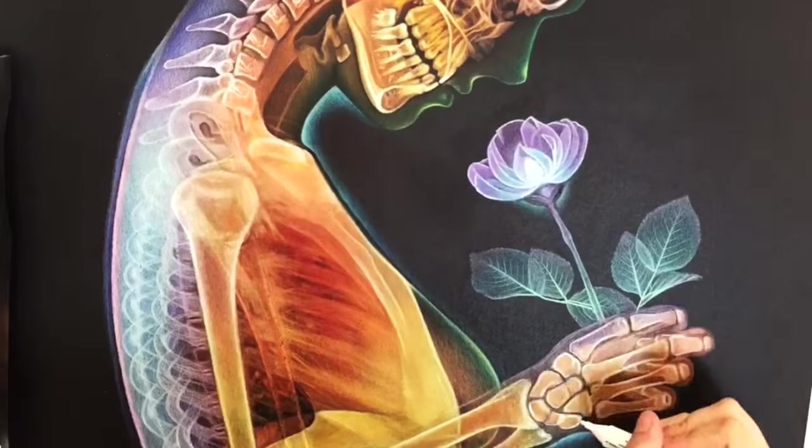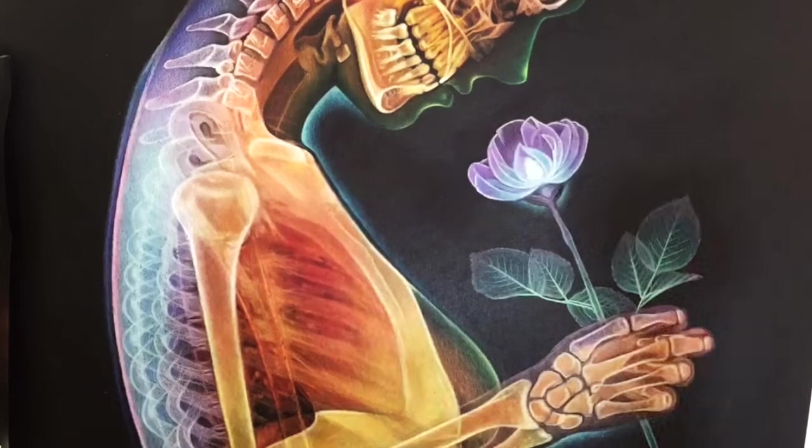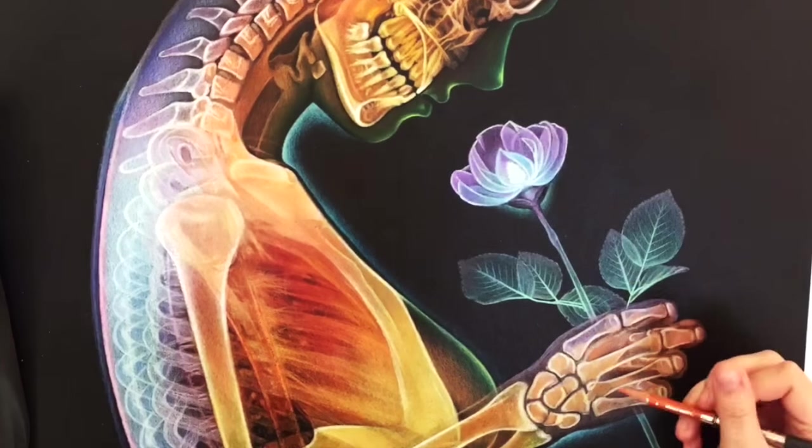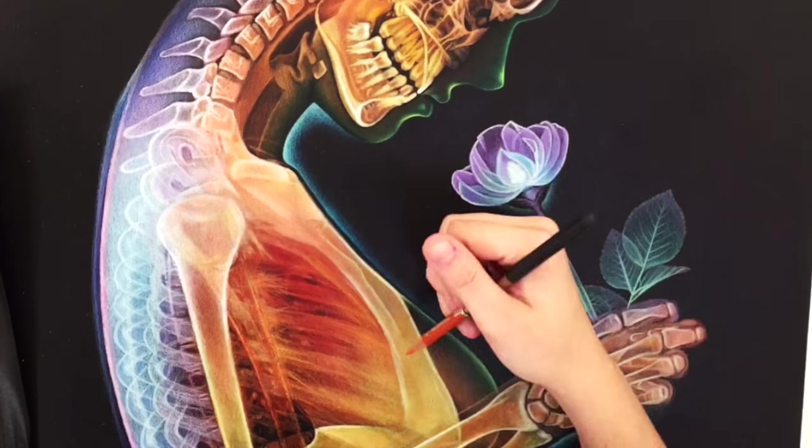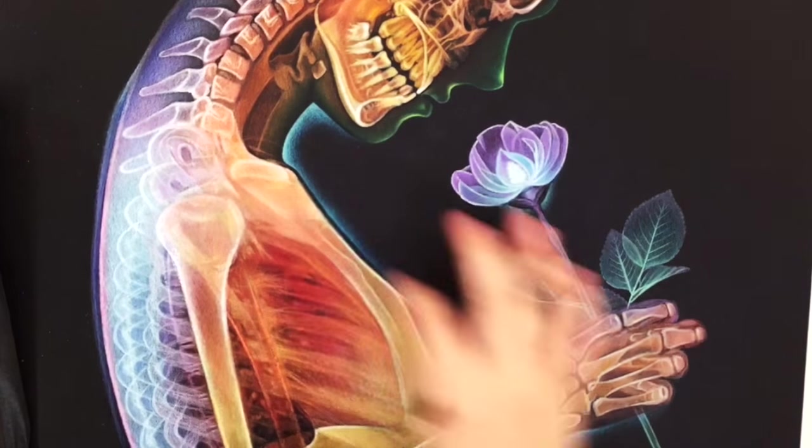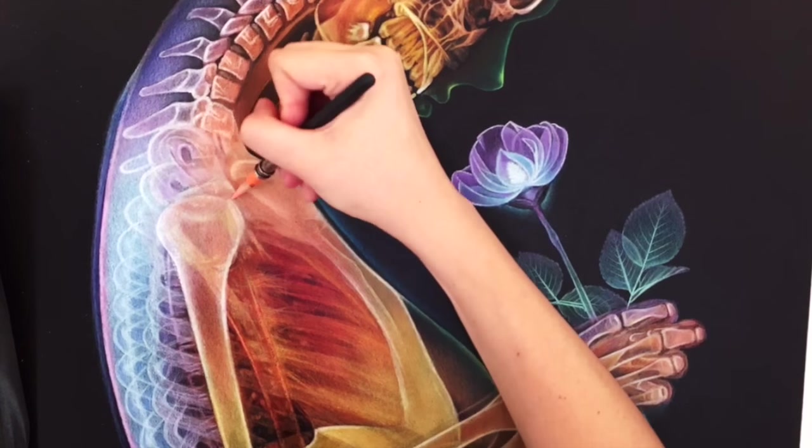And there you see me going in with my little Winsor & Newton paint marker which I highly recommend. You can see it gets those little bright highlights perfectly. So I'm going in and smoothing out all my final little things. Adding in a few of the bone textures and things like that.